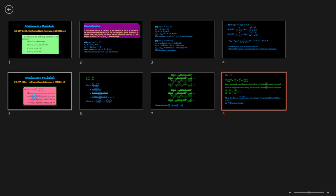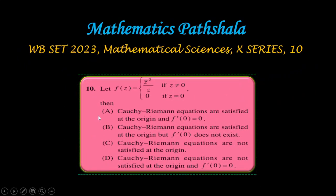From our analysis: the Cauchy-Riemann equations are satisfied at the origin, but f'(0) does not exist. Option A (CR satisfied and f'(0) = 0) is false. Option C and D (CR not satisfied) are also false. Therefore, option B is the only correct answer: the Cauchy-Riemann equations are satisfied at the origin, but f'(0) does not exist.